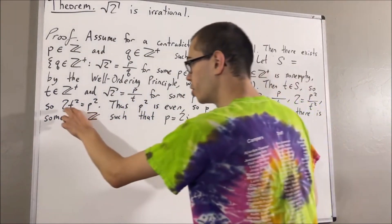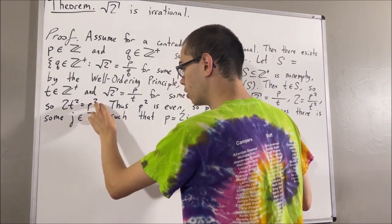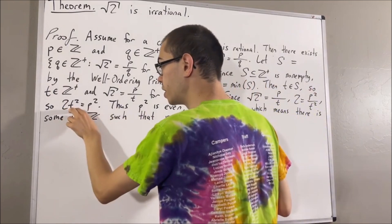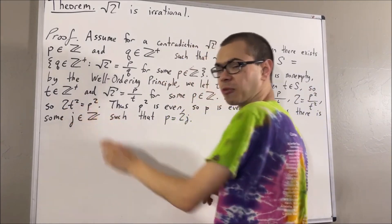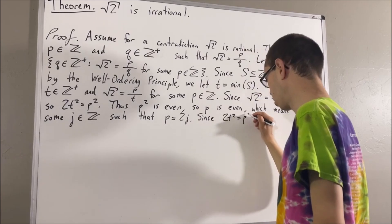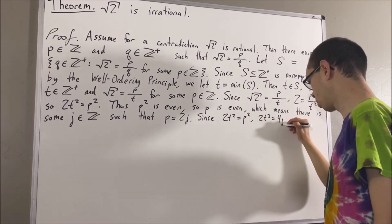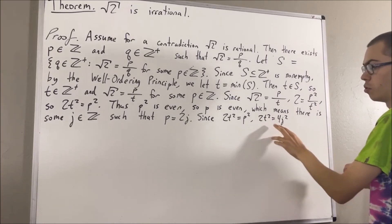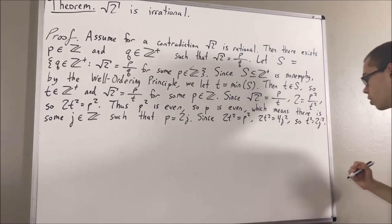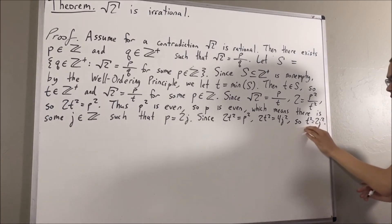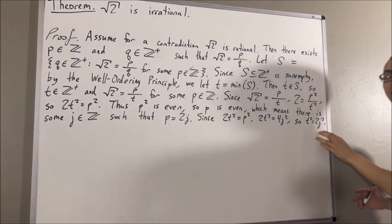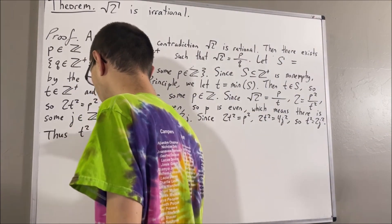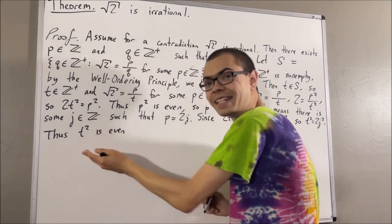Since two t squared is equal to p squared, let's take p and substitute it for two j. If we do that, we're going to get two t squared is equal to four j squared. Then, dividing two on both sides, we get t squared equals two j squared. So we see that t squared is equal to two times an integer, and that's what it means for t squared to be even. But again, this implies that t is even.